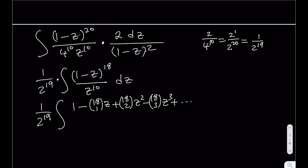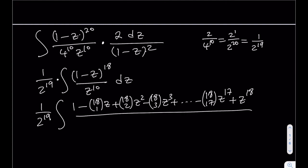The expansion runs from z^0 to z^18, giving 19 terms total. Since 18 is even, the last term z^18 is positive. The second-to-last term is -(18 choose 17) · z^17, and the final term is +z^18. The whole expression is then divided by z^10 and multiplied by dz.